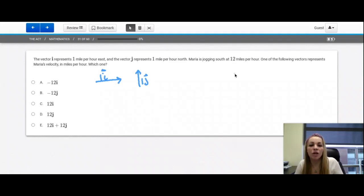In this problem we're curious about Maria jogging south at 12 miles per hour. So we're going to look at this j vector and she's going south. So we're going to change this negative and then make it a 12. We're going to go down here negative because it's going south instead, and she's going 12 miles per hour instead of one. So this one is b, negative 12j.